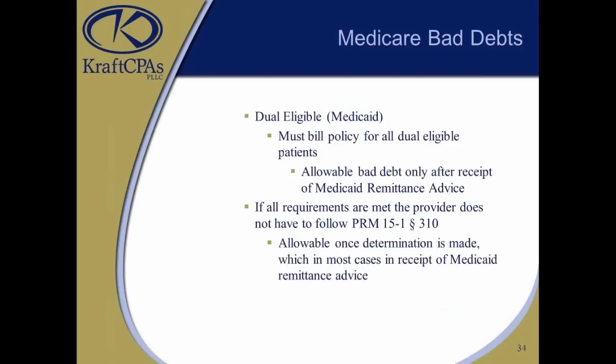If the patient is dual-eligible for Medicaid, it's allowable bad debt after you bill Medicaid and get the remit denying services. One thing to be careful of: if you didn't bill Medicaid timely and it comes back denied on a timely basis, you can't claim it. The denial code has to be based on charges being less than allowable per Medicaid — not a timely filing issue or any other issue. If you meet all those requirements, you don't have to wait 120 days; you can claim it once you have that remit on file.